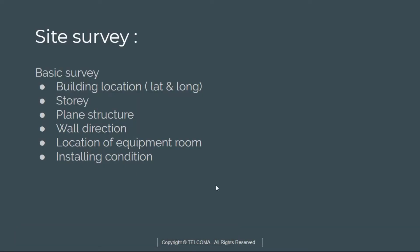Under site survey we have a basic survey, which covers building location — that means latitude and longitude — how many storeys the building has, plane structure, wall direction, and the location of the equipment room and installing condition.